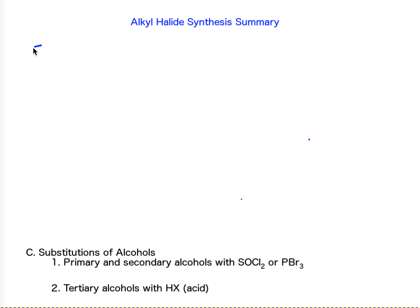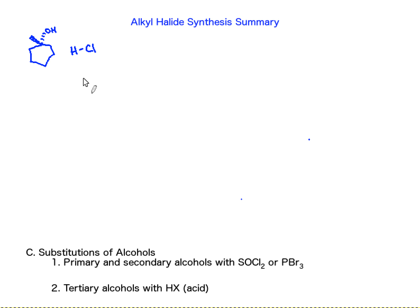Let's draw our tertiary alcohol — methylcyclohexanol — and give it a little potential stereochemistry, though there really isn't any because this is symmetrical. Now we're going to treat this with hydrochloric acid. The hint behind this mechanism was that the acid is going to act as an acid, so it's going to protonate this alcohol at the most obvious place: the alcohol group.